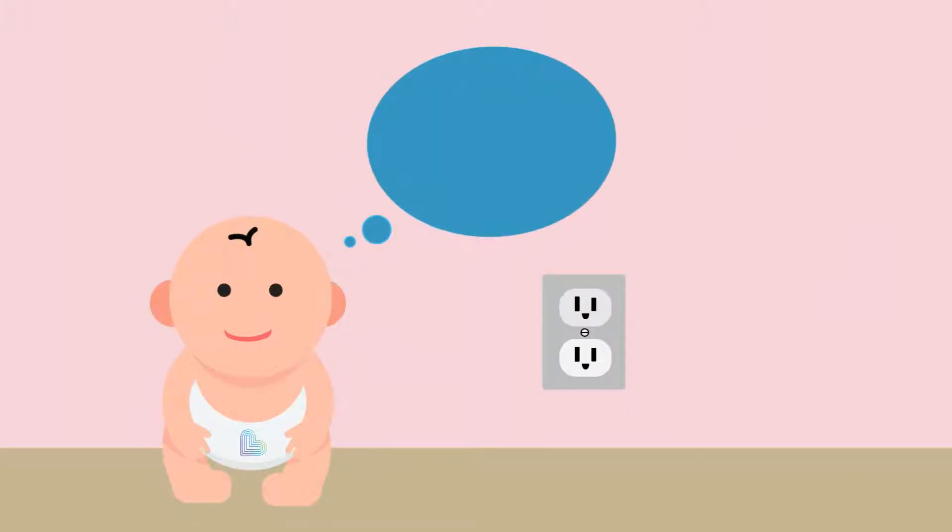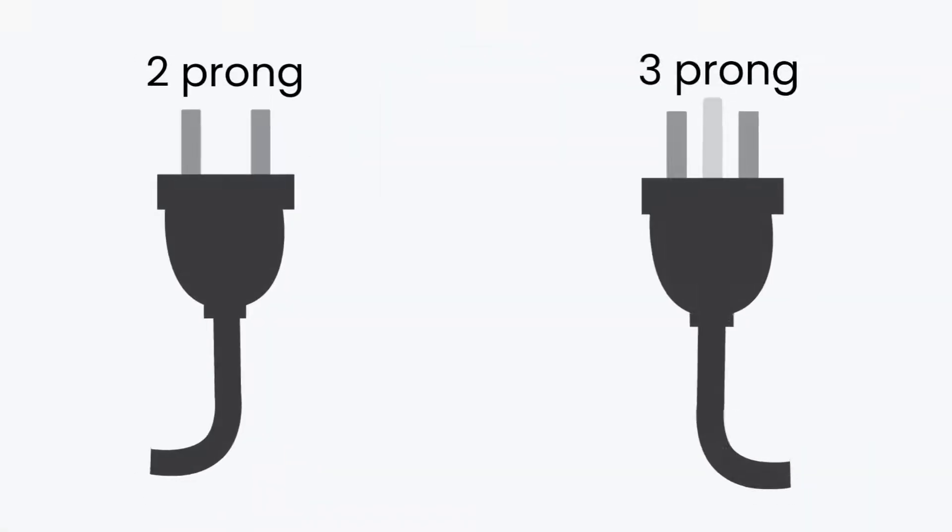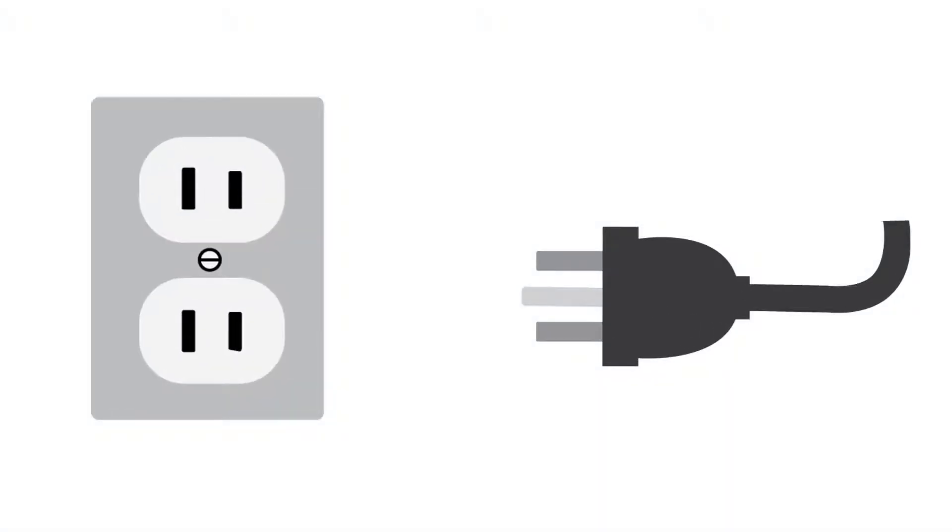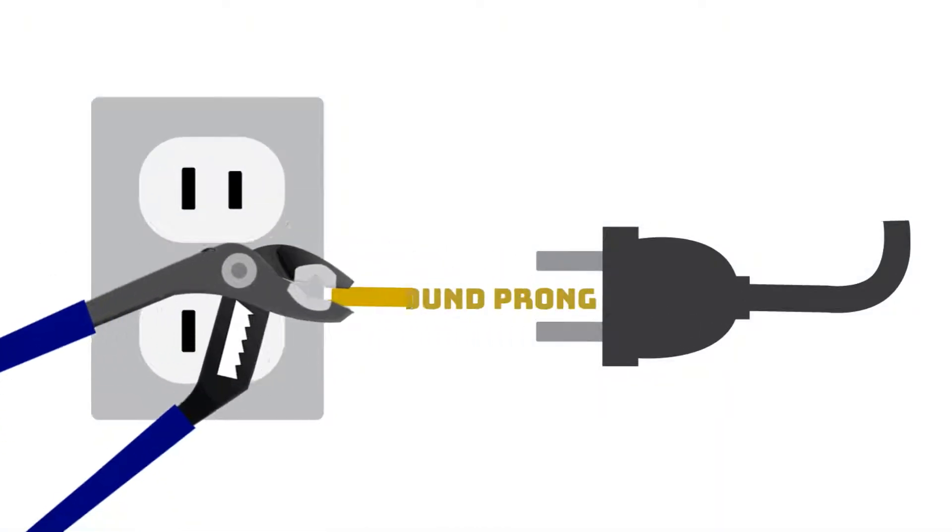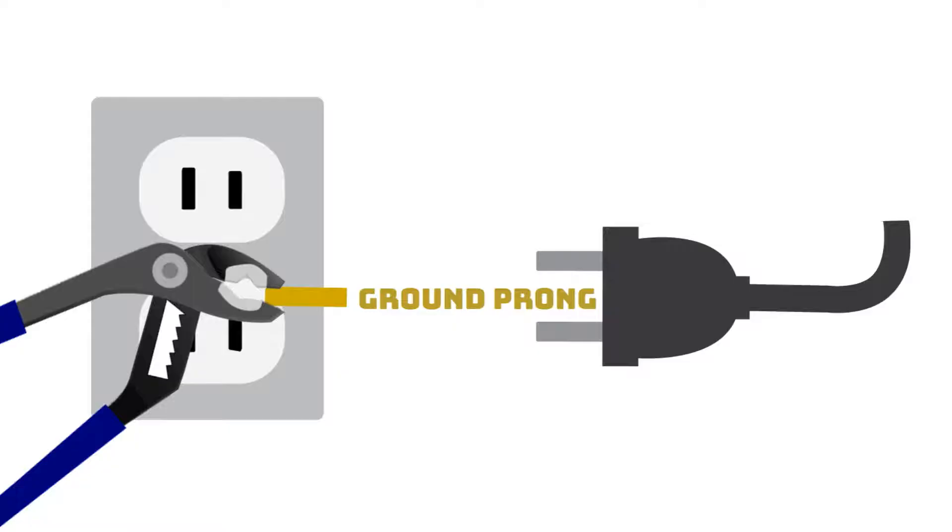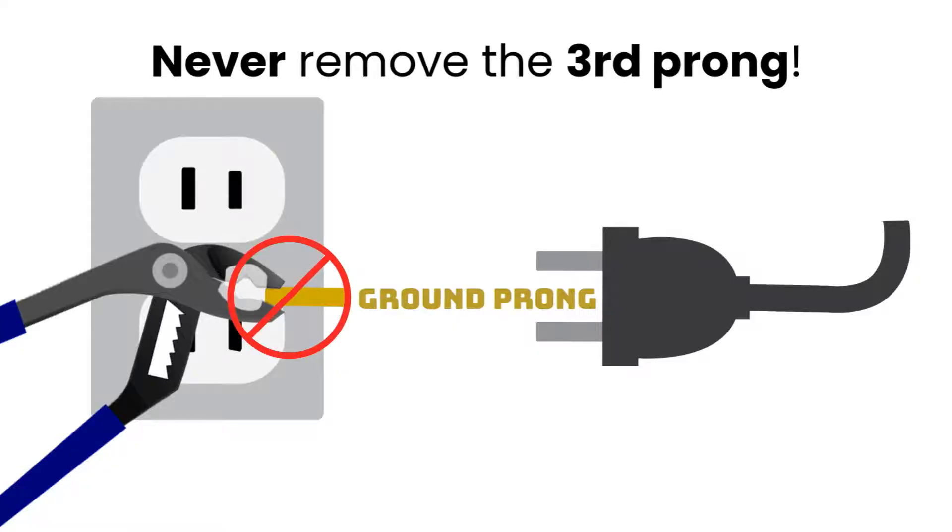You may not remember, but you've probably been hearing this since you first started walking. Don't stick anything into an outlet except a plug. There are two-prong and three-prong plugs. Never make a three-prong into a two-prong. That third prong is a safety feature called a ground prong. It keeps you from getting shocked if the appliance malfunctions.